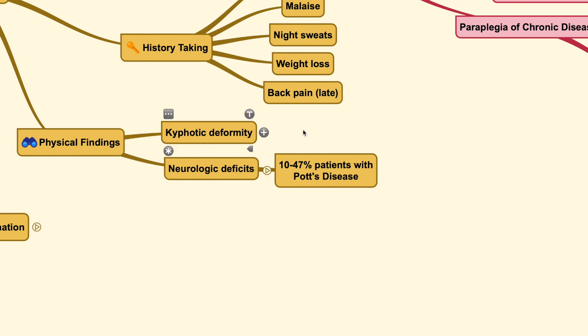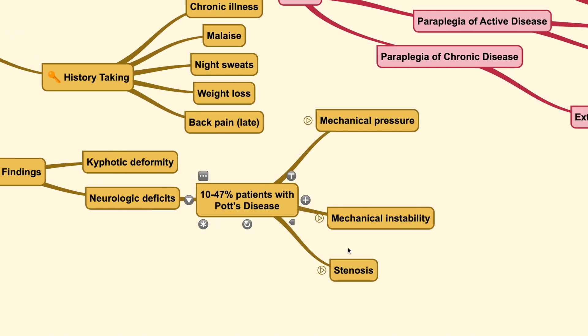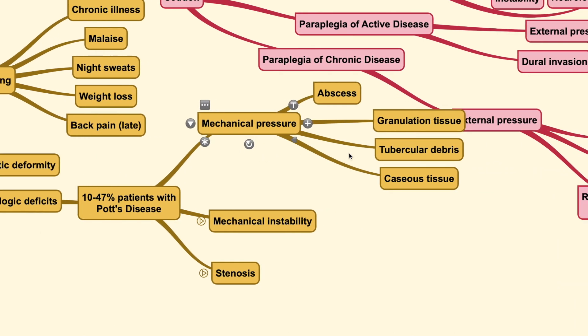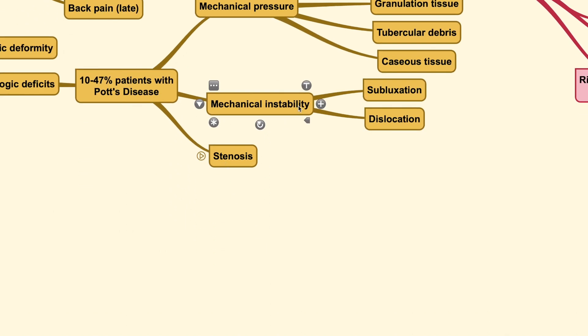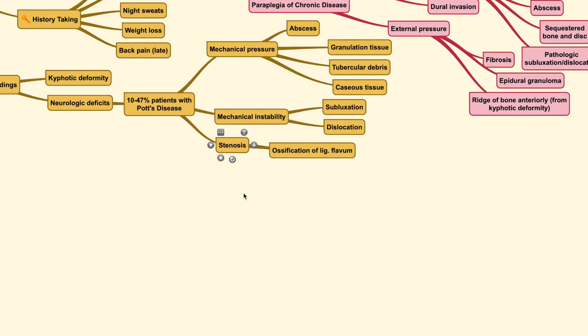Physical findings will usually reveal a kyphotic deformity, especially at the back region. We call it gibbus and the neurologic deficit is usually present in only around 10 to 47% of patients with Pott's disease. You need to know that Pott's disease is also the other name we call a spinal tuberculosis. And it could be caused by various things such as mechanical pressure by the abscess granulation tissue, tubercular debris, caseous tissue. But also could be caused by mechanical instability such as subluxation or dislocation.